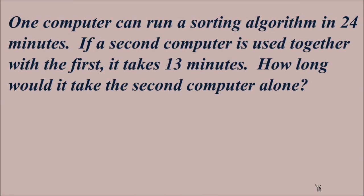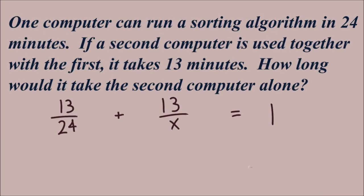Here's another example for you to try — pause the video, try it, then restart and we'll look at the answer together. One computer can run a sorting algorithm in 24 minutes. If a second computer is used together with the first, it takes 13 minutes. How long would it take the second computer working alone? Setting up our equation: time together goes in the numerators, time alone in each denominator. One computer alone takes 24 minutes; the other alone is our unknown.